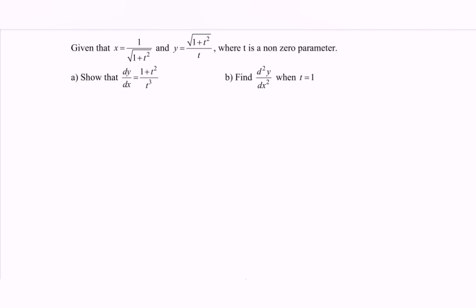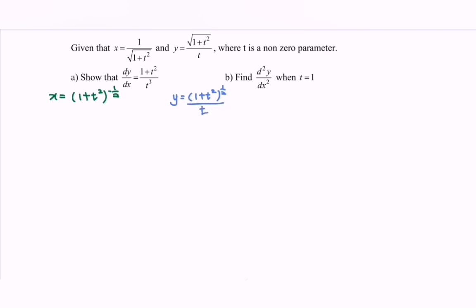Given the situation: x is equal to bracket (1 plus t squared) to the power of negative 1 over 2. Next, y is equal to bracket (1 plus t squared) to the power of 1 over 2, all over t.